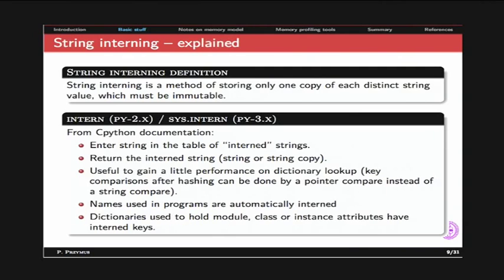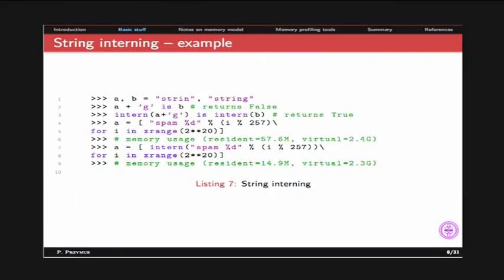When we use the intern function, we enter a string into the table of interned strings and get a reference back — it might be the same string if already interned, or a copy. We can get a little performance improvement on dictionary lookups. Some Python names are automatically interned, and dictionaries holding module, class, and instance attributes have interned keys. We can also reduce space when we have many identical strings in our code.